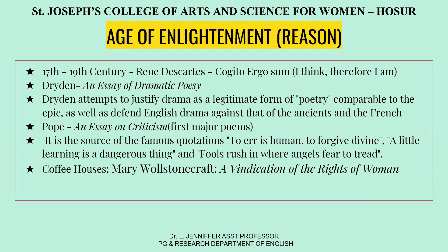Pope has written An Essay on Criticism, one of his first major poems, where he talks about human life. It is a source of famous quotations like 'to err is human, to forgive divine,' 'a little learning is a dangerous thing,' and 'fools rush in where angels fear to tread.' We also have coffee houses, especially in the age of Queen Anne, which became meeting points for business discussions and literary reviews. Mary Wollstonecraft, the feminist, has written A Vindication of the Rights of Women, an important work of criticism in this era.